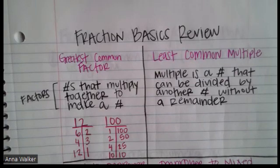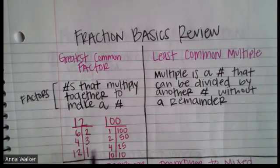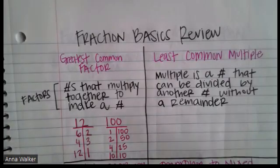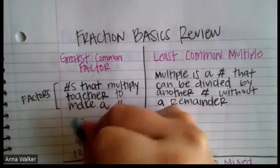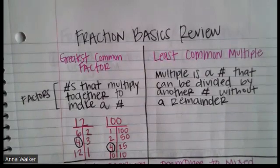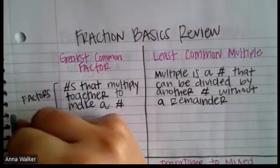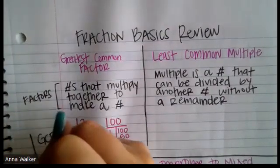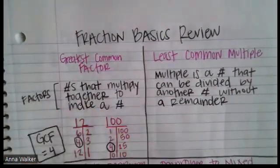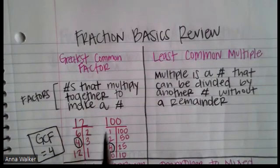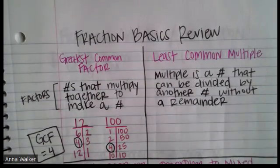The greatest common factor is the biggest one they share. Looking at both lists, they share 1, 2, and 4. Out of those, 4 is the biggest, so the greatest common factor — or GCF — is 4. We use the greatest common factor when we simplify fractions, which we'll refer back to in the last part of this video.